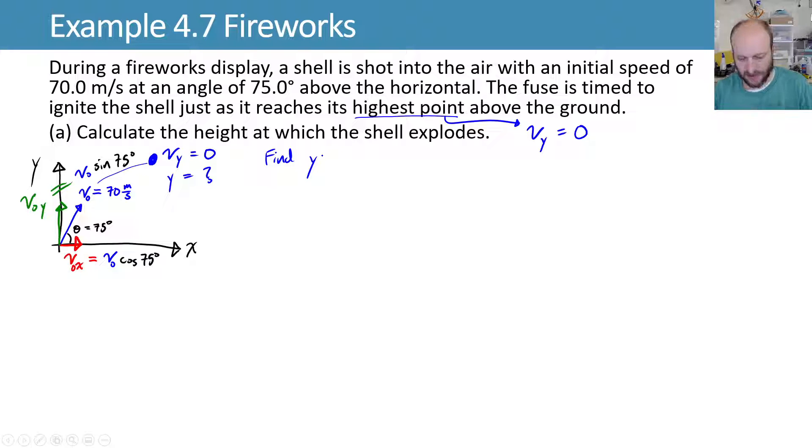Now we want to calculate the height at which the shell explodes. So I want to know, what is y? So find y. We'll split this up into x and y components. So looking at the x direction, or the horizontal direction, I can write my expressions for constant velocity motion. So my initial velocity in the x direction is equal to, just plugging in numbers to this expression we have from over there. 70 meters per second is the initial speed, times cosine of 75 degrees. And we get an initial x velocity of 18.1 meters per second. And then our initial x position is zero, which will start at the origin.